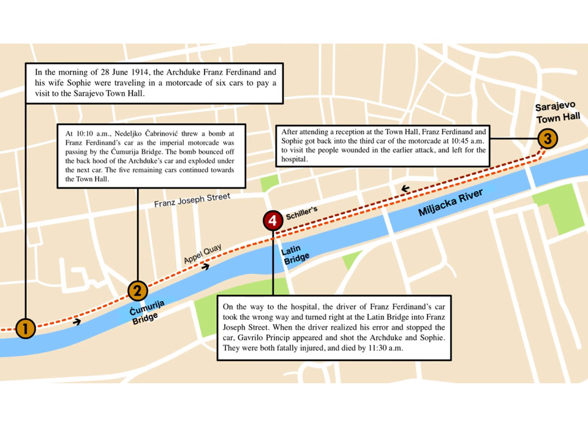Cabrinovich didn't get the Archduke. Once the bomb went off, the Archduke's driver immediately sped at high speed toward Town Hall. The other three assassins heard the bomb, didn't know what happened, couldn't take action as the car sped away, and basically gave up. One of those guys — Gavrilo Princip (G-A-V-R-I-L-O P-R-I-N-C-I-P) — decided the assassination was a total failure, so he went into a little sandwich shop to have lunch, drink a little, and stew over the fact that they had missed the Archduke.